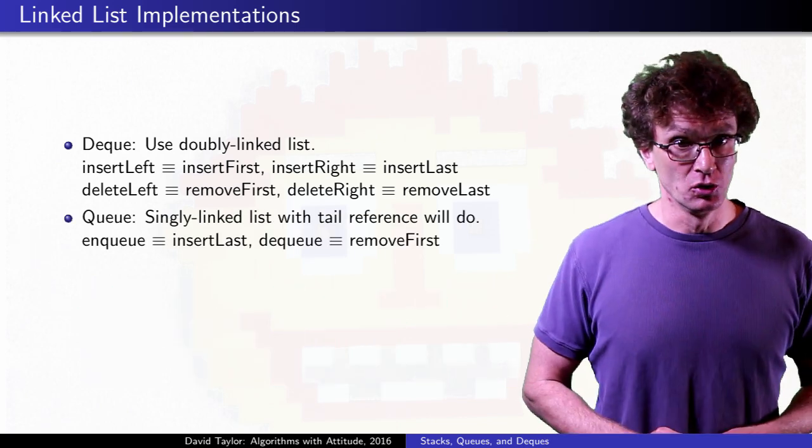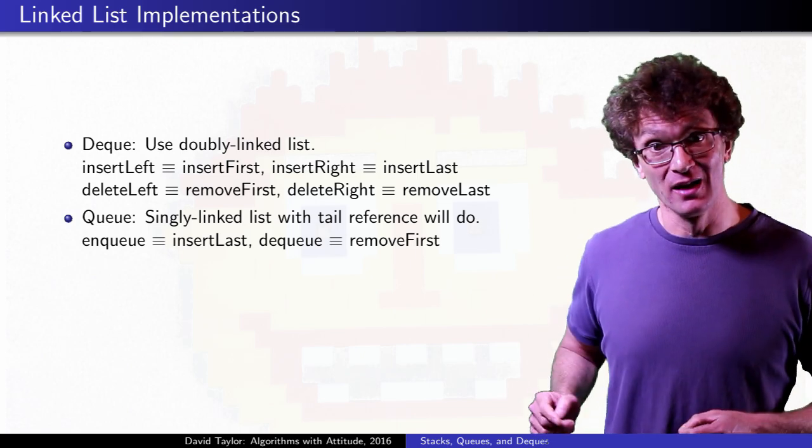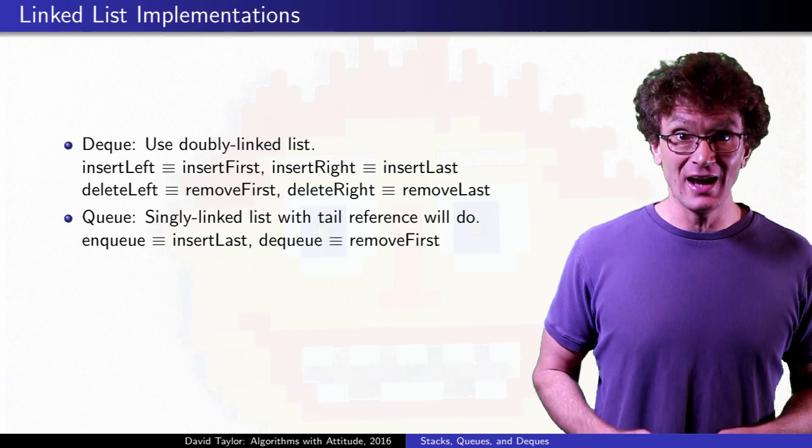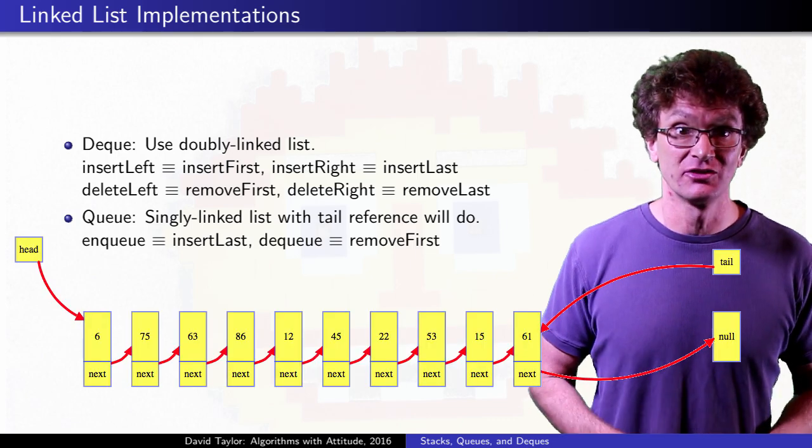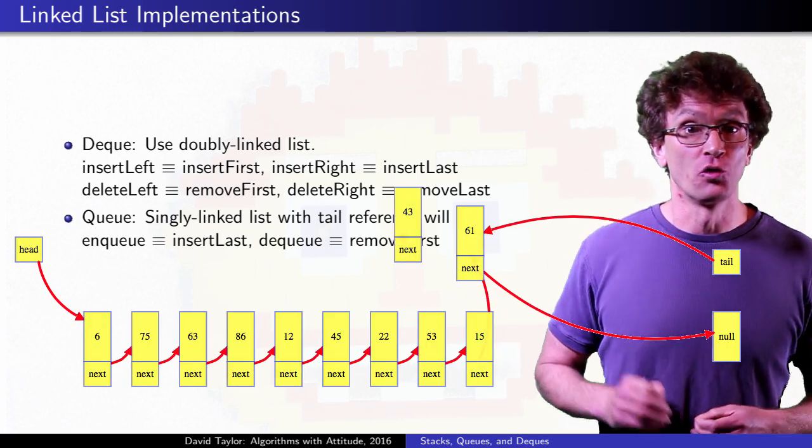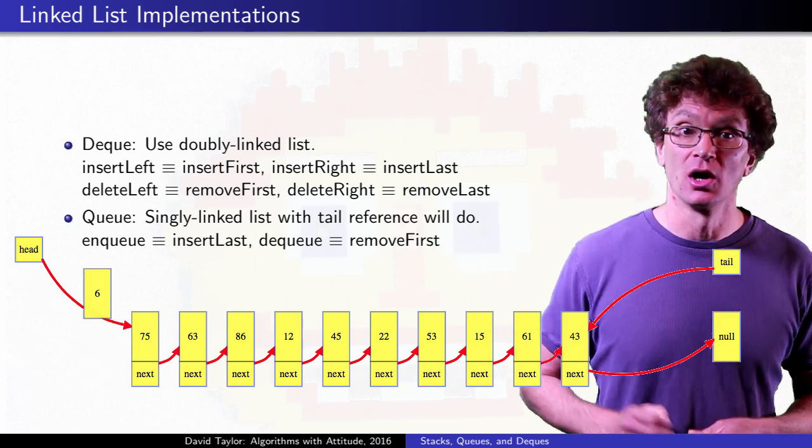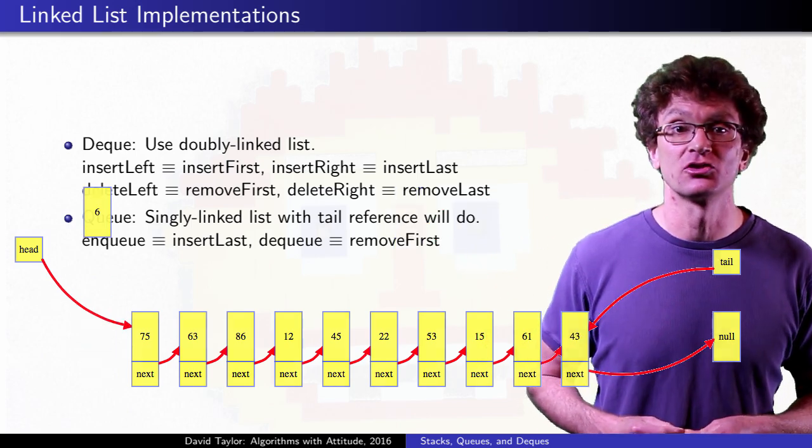For a regular queue, I'll show insertion at the tail and deletions from the head, and it turns out that for those, we can actually use a singly linked list with a tail reference. For regular queues, we don't need the doubly linked list structure underneath, a singly linked list will do.